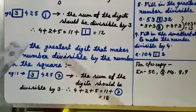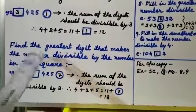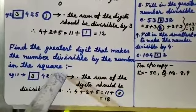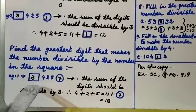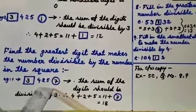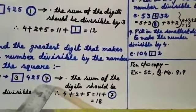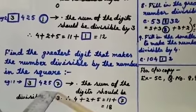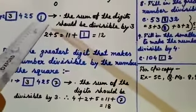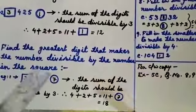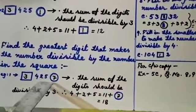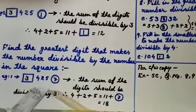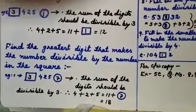Now see the next question: find the greatest digit that makes the number divisible by the number in the square. Here the square contains 3, and the number to be made divisible is 425 with the last digit missing. This is the same example used before, but now you have to find the greatest digit divisible by 3. First get the sum: 4 plus 2 plus 5 equals 11.